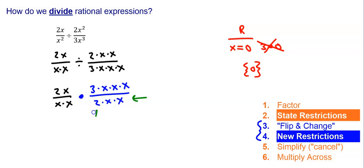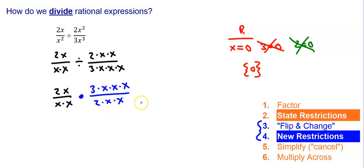I have 2 — well, 2 equals zero doesn't make sense. Then I have x — I already have that, and another x — already have that too. So I don't actually have any new restrictions in this case, but we always have to make sure. We always have to check.